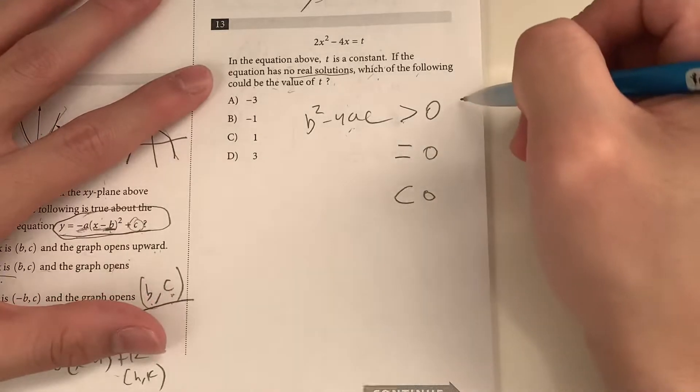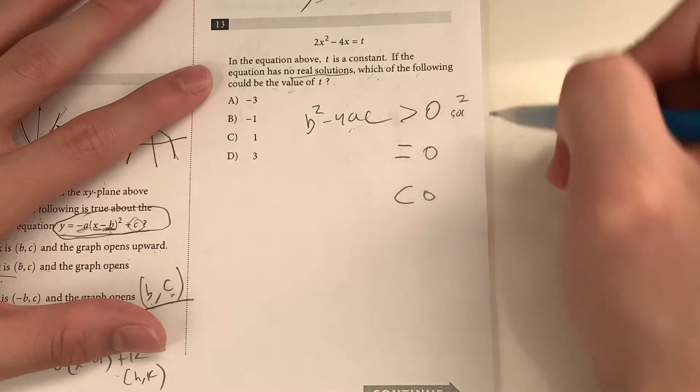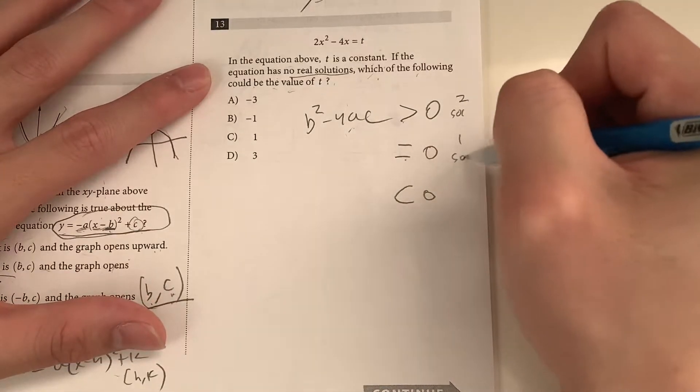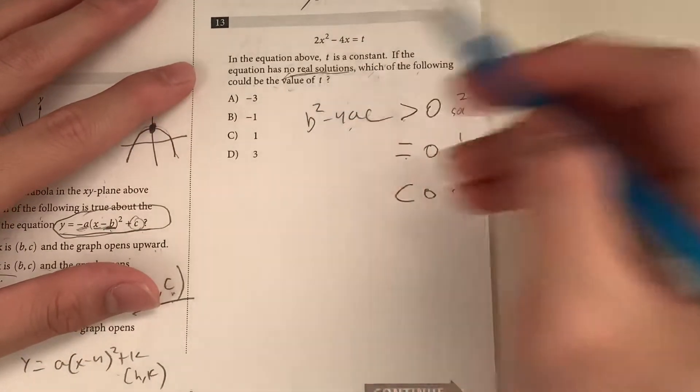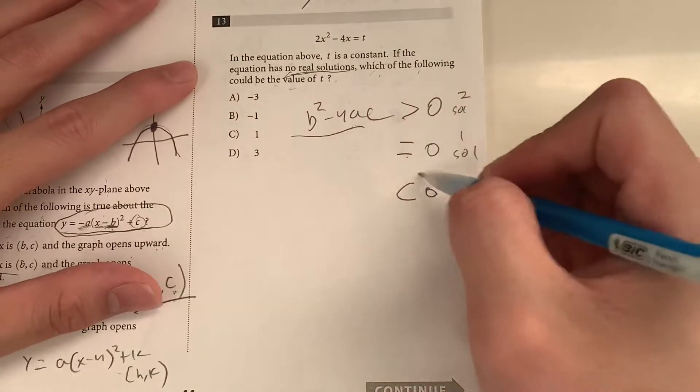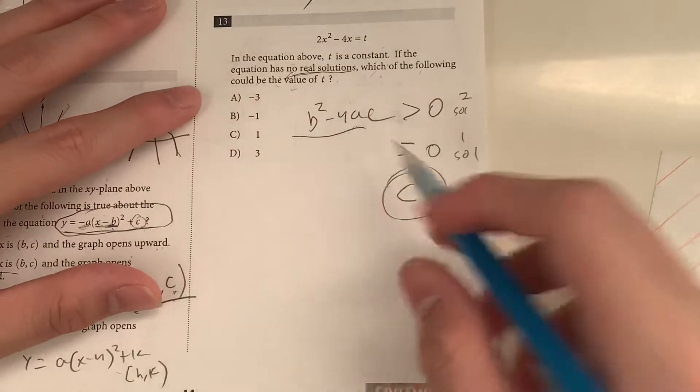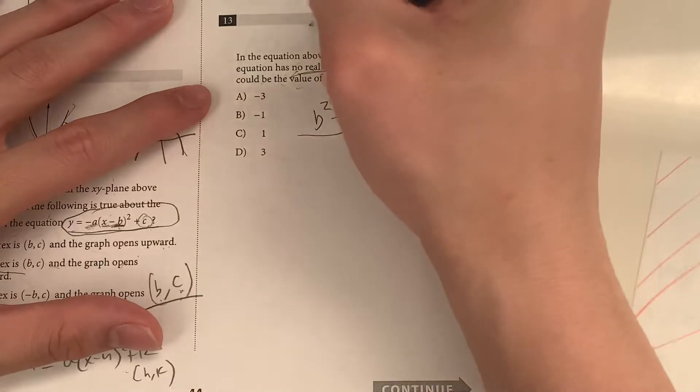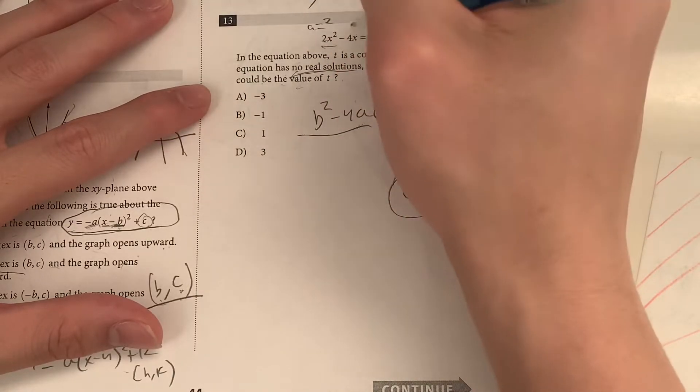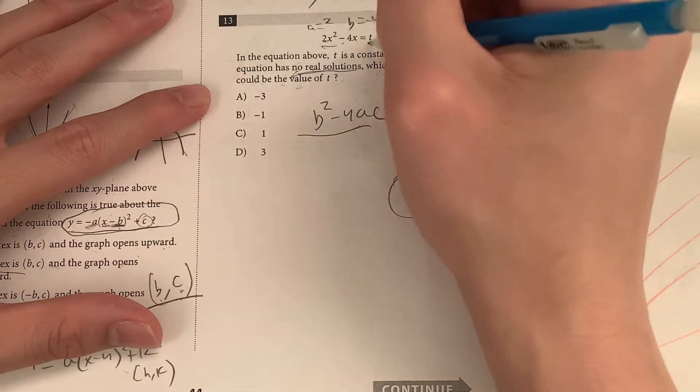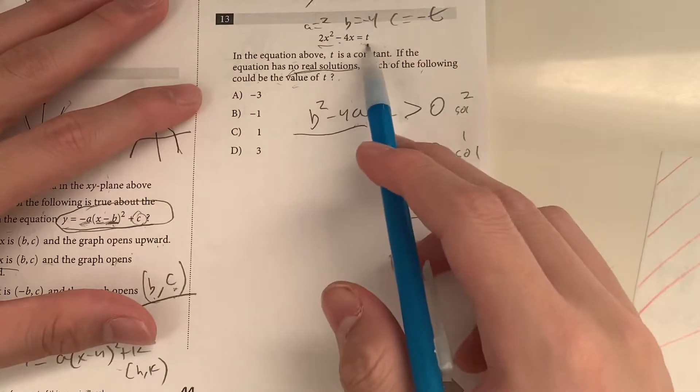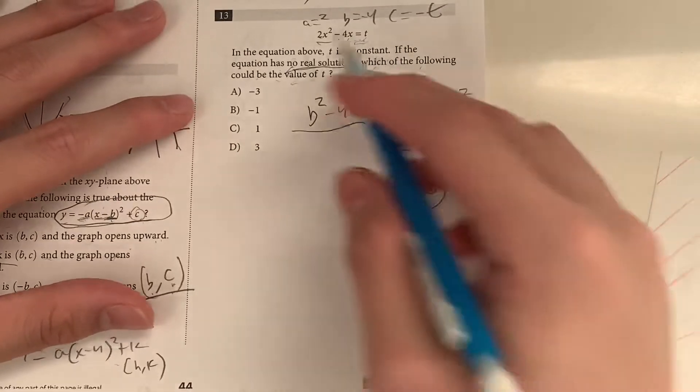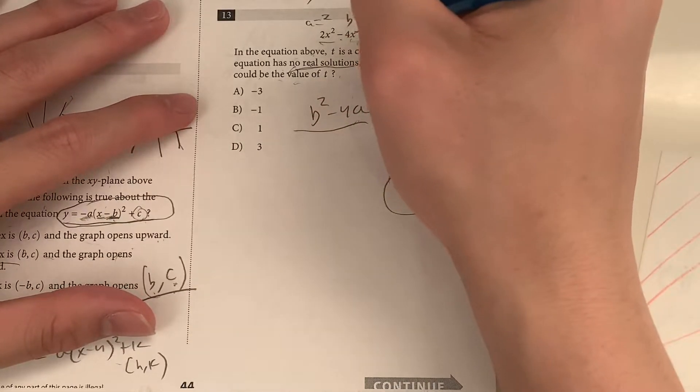So if this value is greater than 0, there's going to be equal to 0 and less than 0. So if it's greater than 0, there are two solutions. If it's equal to 0, there's one solution. And if it's less than 0, there's none. So which of the following are we looking for? Well, it says no solutions. So we want B squared minus 4ac to be less than 0. Okay, so what's the values of A, B, and C? A is equal to 2. B is equal to negative 4. And C is equal to negative T, right? Remember, we have to subtract T on both sides. That's how we got negative T. And that's equal to 0 when we subtract it.